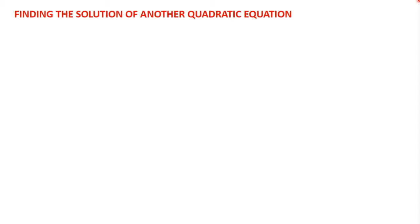Welcome back. We started learning how to use the graph of a quadratic function to find the solution of another quadratic equation in the previous video. We learned how to do this when the coefficient of the quadratic term in the equation is the same as the coefficient in the function. In this video, we are going to learn how to do this when the coefficients are different.